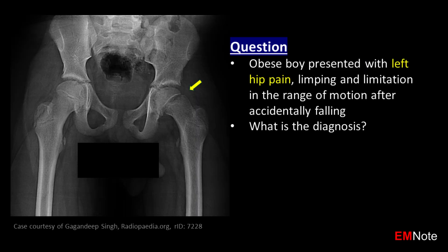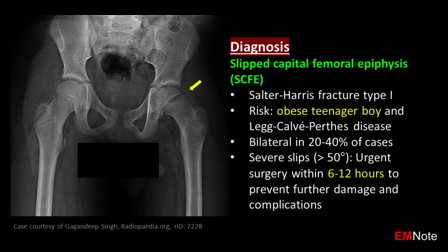This obese teenage boy presented with left hip pain, limping, and limitation in the range of motion after accidentally falling. What is the diagnosis? The diagnosis is slipped capital femoral epiphysis.